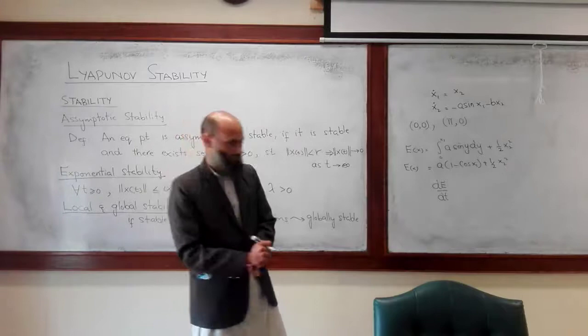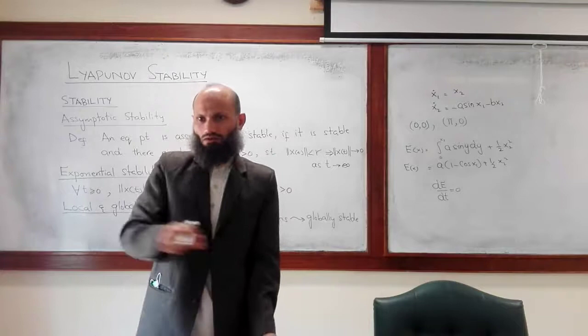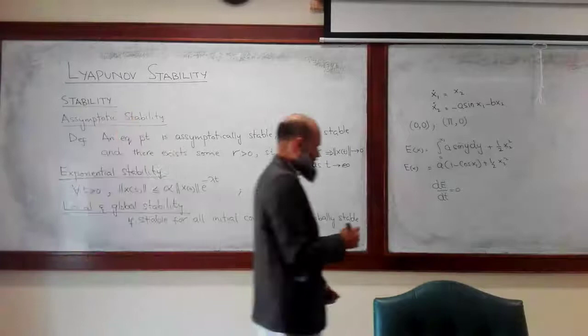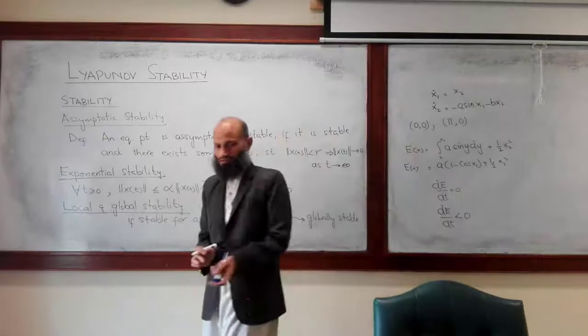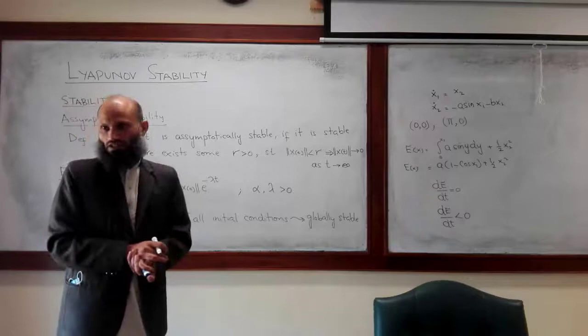If this is the case, then what does it mean intuitively? It will keep on oscillating about the equilibrium point — it is simply stable, it is not asymptotically stable. However, if its energy is decreasing, that is dE/dt is less than zero, then it will finally converge to the equilibrium point — that is, the equilibrium point is asymptotically stable.